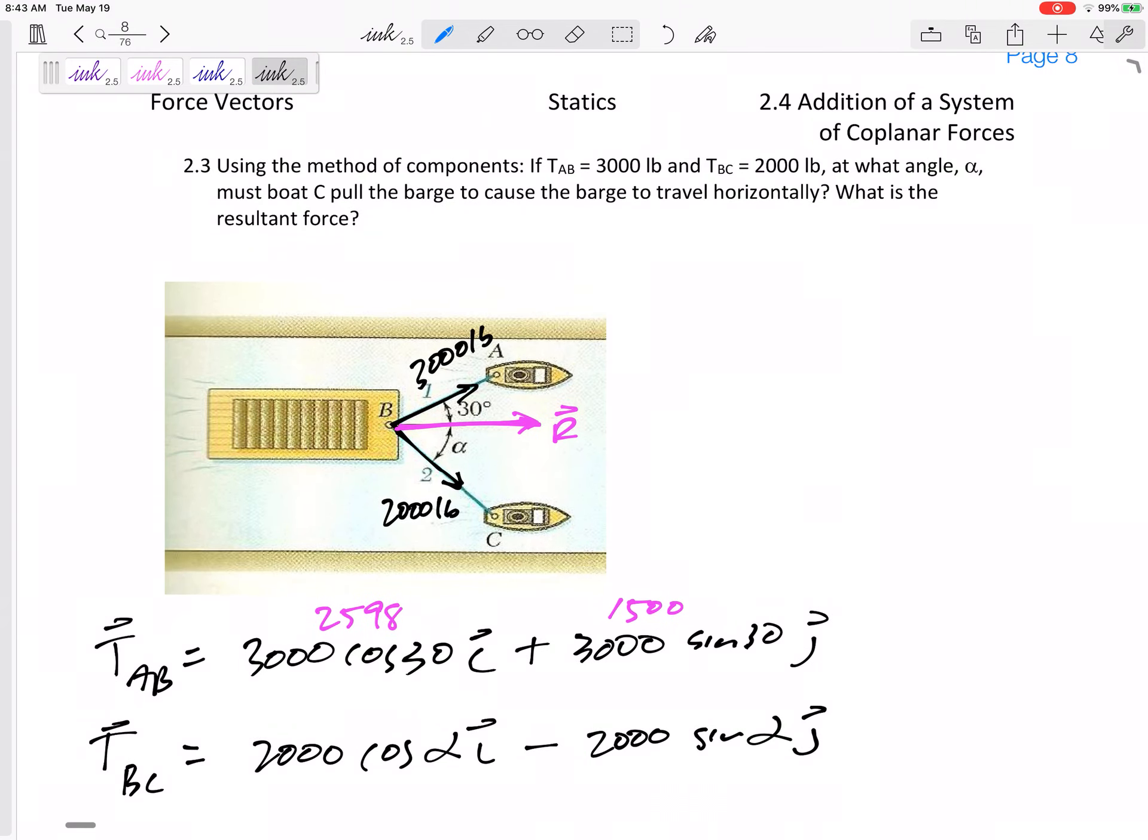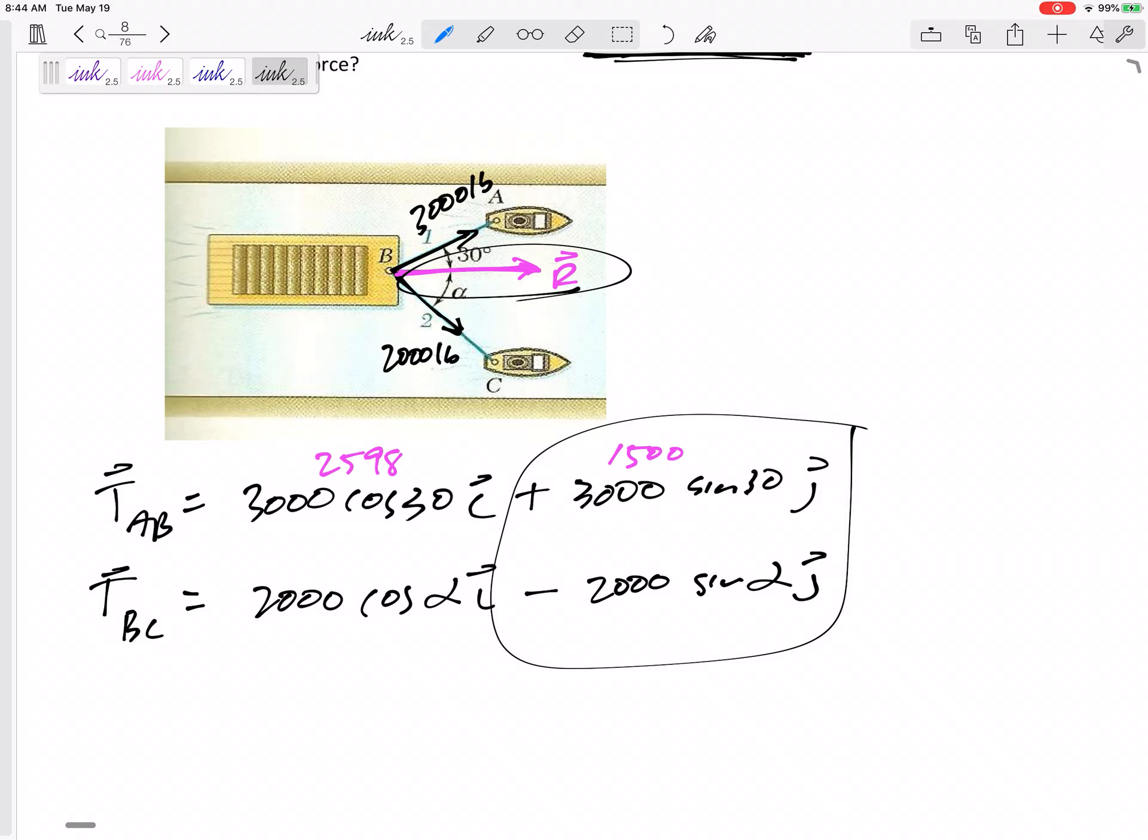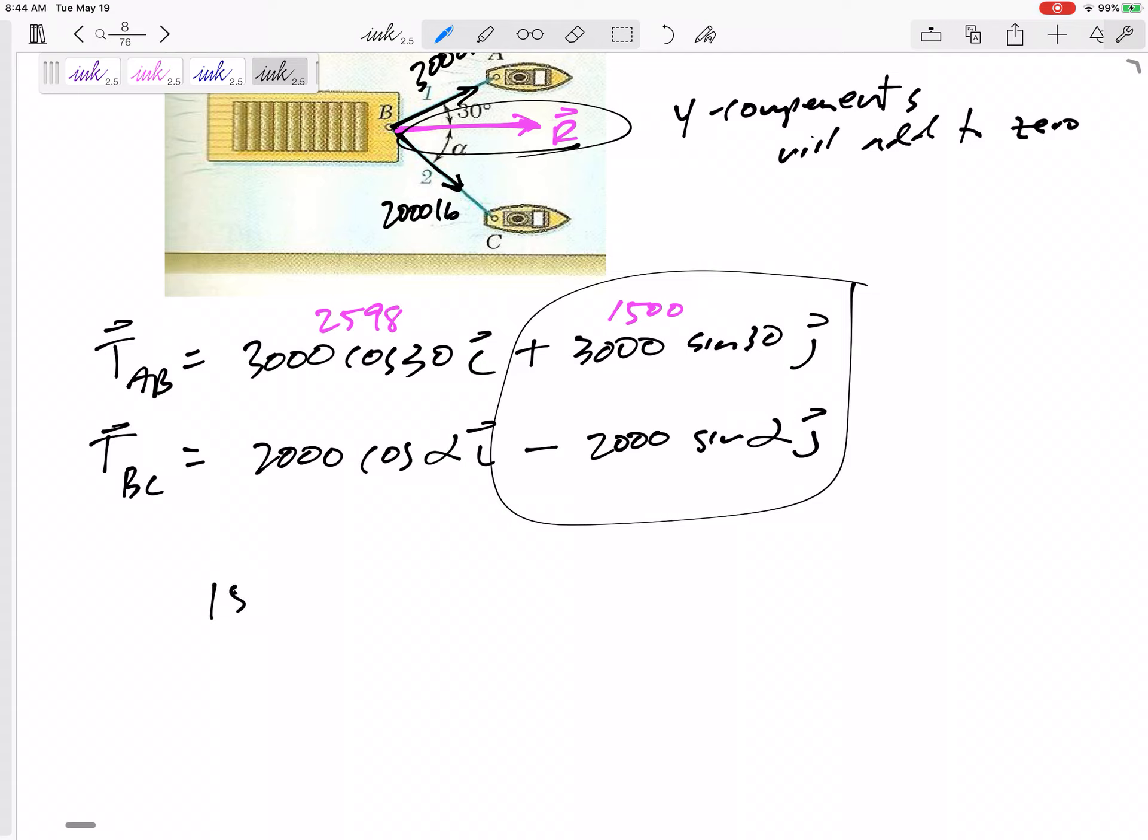So what does it mean when the barge will travel horizontally? If it's going to travel horizontally, this resultant is going to be horizontal. If this resultant is horizontal, then all of it is in the i direction. None of it is in the j direction. It's saying that these two components, the j components, are going to add up to zero. Or the y components should add to zero.